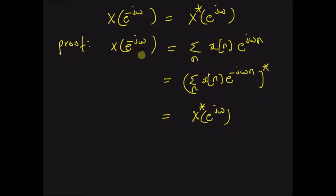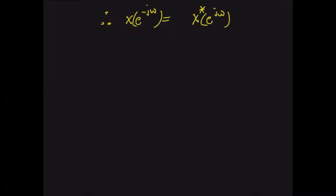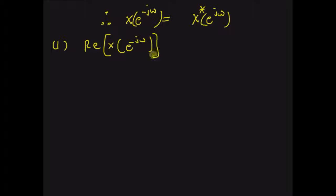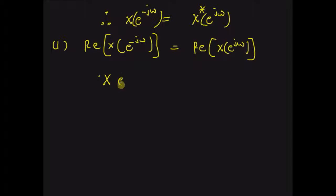Therefore, X(e^{-jω}) is equal to the conjugate of the original DTFT. Now let us look at the consequences of this symmetry property. The first one is: the real part of X(e^{-jω}) is equal to the real part of X(e^{jω}). This consequence directly follows from the symmetry property, since X(e^{-jω}) is equal to the conjugate of X(e^{jω}).